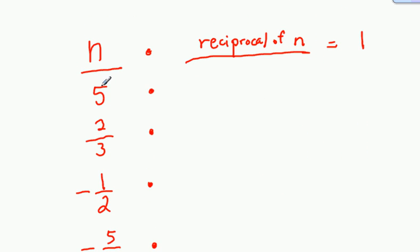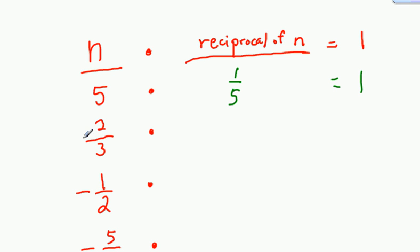So what would I multiply 5 by to get 1? That would be 1 fifth, because 1 fifth of 5 is 1 — if we multiply 5 times 1 fifth, we get 5 over 5, which equals 1. For 2 thirds, I'd multiply by 3 halves. That would give us 6 over 6, which equals 1.